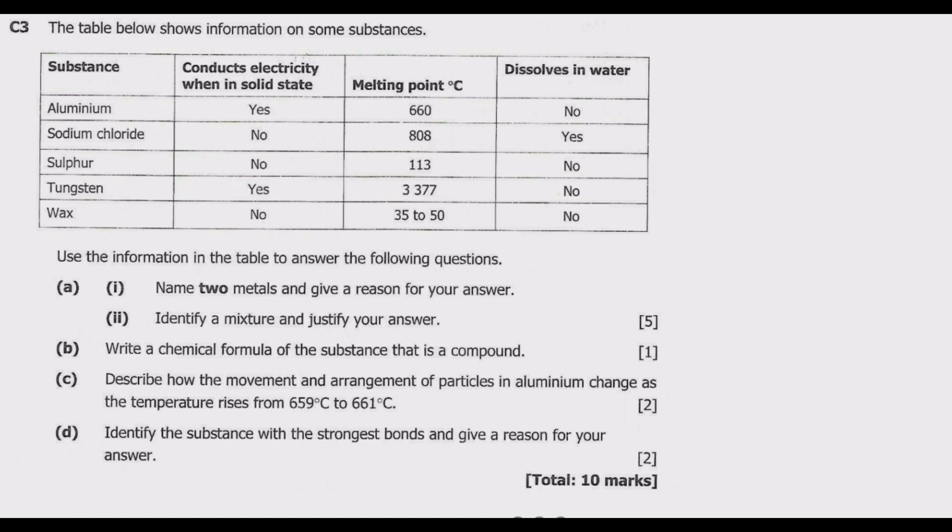Question A: Name two metals and give a reason for your answer. If you look at this, what will tell us whether a substance is a metal or not is whether that substance conducts electricity or not, number two whether it has a high melting point, and number three whether it dissolves in water or not. If you look at aluminum, it conducts electricity and the melting point is high, then it does not dissolve in water. So this is a metal.